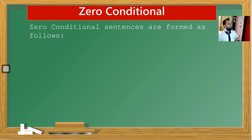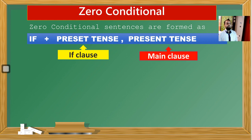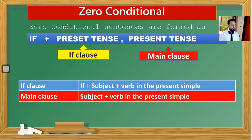Zero conditional sentences are formed as follows. After 'if', we use simple present tense in both sentences — both in the if clause and in the main clause. If gives the meaning of 'eğer' in Turkish: eğer şu olursa, bu olur. In the if clause, after 'if', we use subject and verb in the present simple. In the main clause, after the subject, again verb in the present simple.